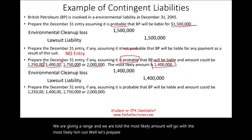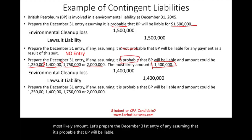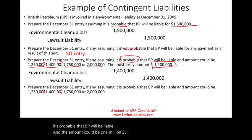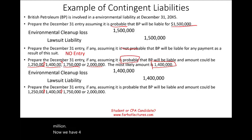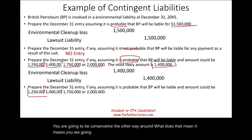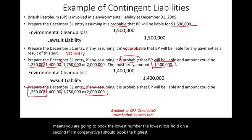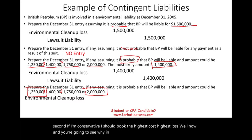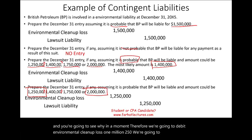Now, prepare the December 31st entry assuming it's probable that BP will be liable and the amount could be $1,250,000, $1,400,000, $1,750,000, or $2,000,000 — but we are not told which is the most likely amount. Under GAAP, when there is no most likely estimate, you book the lowest number in the range. Therefore, debit environmental cleanup loss $1,250,000 and credit lawsuit liability $1,250,000.